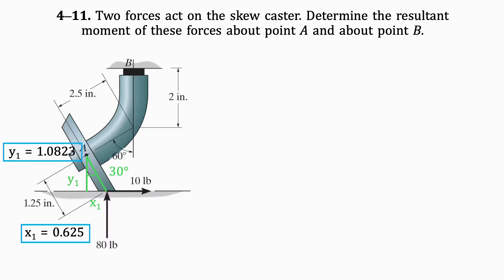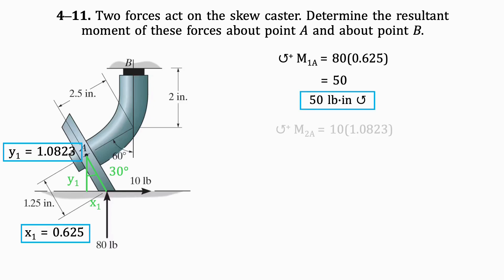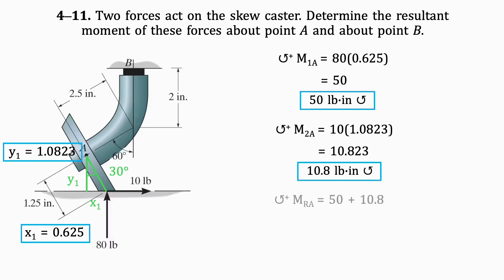Now we have all the necessary information to find the moment about point A. We'll find the moment of the 80-pound force about point A first. This moment is the force times its distance from A, which is 0.625 inches. The result is 50 pound-inches in the counterclockwise direction. The moment of the 10-pound force about point A is the force times its distance from A, which is 1.0823 inches. The result is 10.8 pound-inches in the counterclockwise direction. To find the resultant moment about A, we will add those two moments together, and the result is 60.8 pound-inches in the counterclockwise direction.